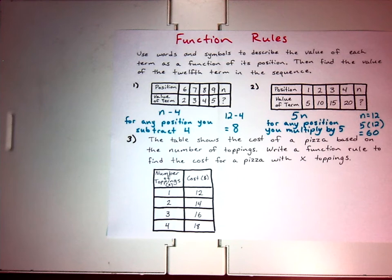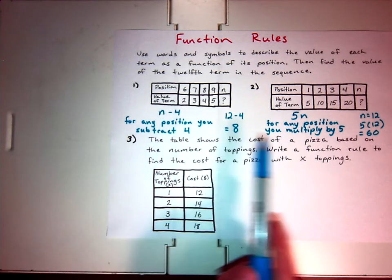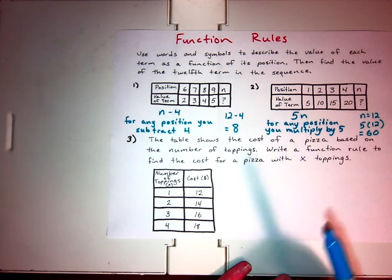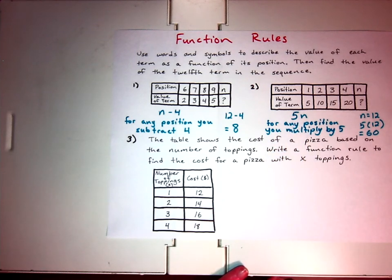Now, for number three, this one is the most difficult. For these, it's n minus four, and this one is five n. One thing is being done. The n is having four taken away from it, or n is being multiplied by five. For this one, I picked a harder problem so that you could see an example of one where it's starting to get more difficult. Number three says, the table shows the cost of a pizza based on the number of toppings. Write a function rule to find the cost for pizza with x toppings.